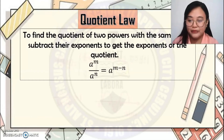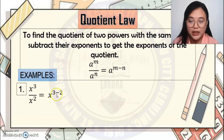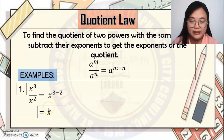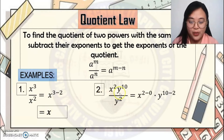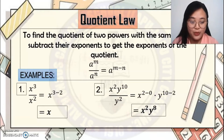Example 1: x cubed over x squared. They have the same base x, so subtract the exponent of the numerator minus the exponent of the denominator: x raised to 3 minus 2, which equals x. Next example: x squared y to the 10th divided by y squared. Since there's no x in the denominator, it becomes x to the 2 minus 0, times y raised to 10 minus 2. Simplify — the answer is x squared y to the 8th.